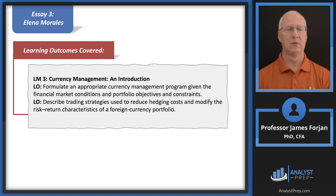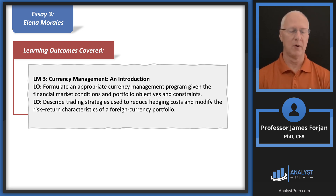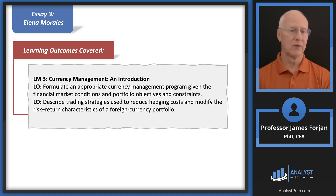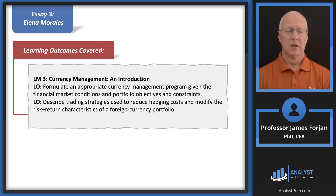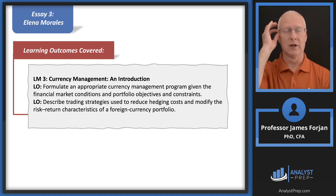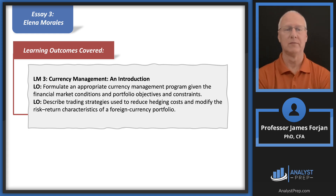We cover two learning objectives here. The first one is an appropriate currency management program. Remember that there are four ways to do this: we could avoid the risk, we could retain the risk, we could transfer the risk, and we could reduce the risk. We're probably not going to just avoid this, so somewhere in that first learning objective we'll have to transfer the risk and maybe reduce it.